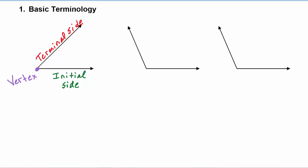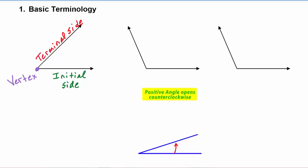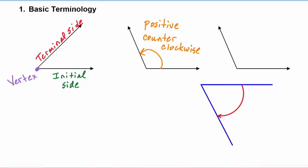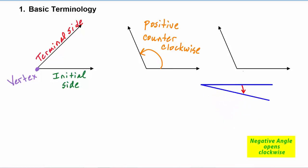Angles have direction. Angles that open in a counterclockwise direction are considered to be positive angles, whereas angles that open in a clockwise direction are considered to be negative angle measures.